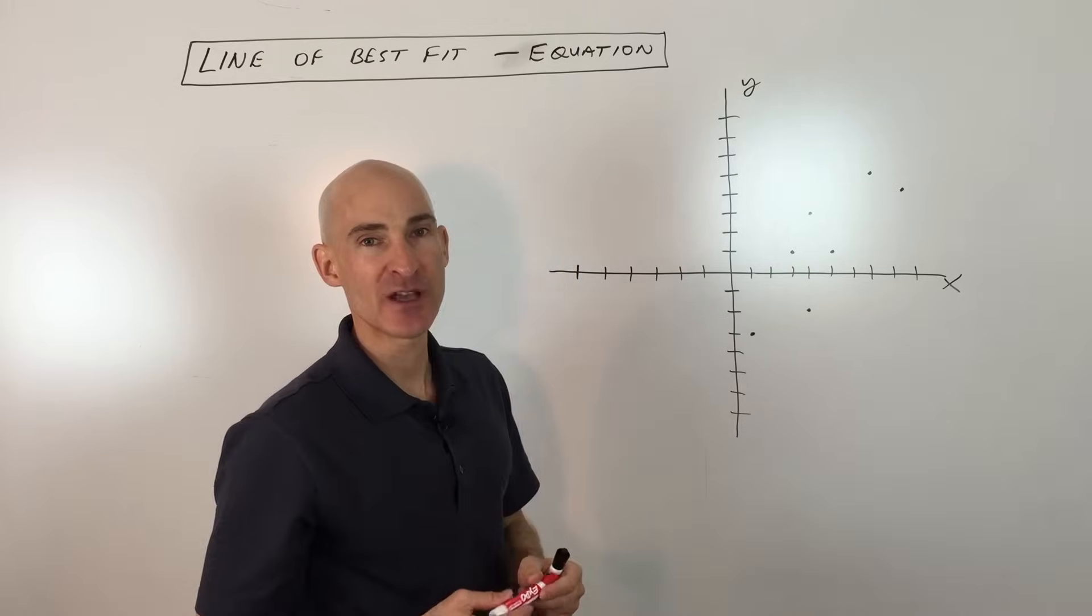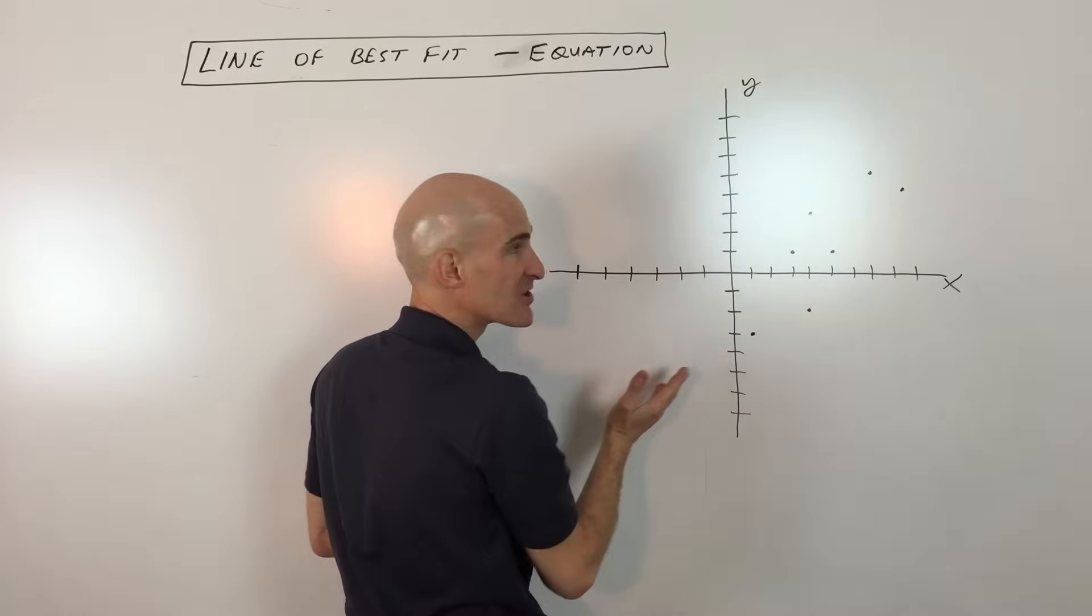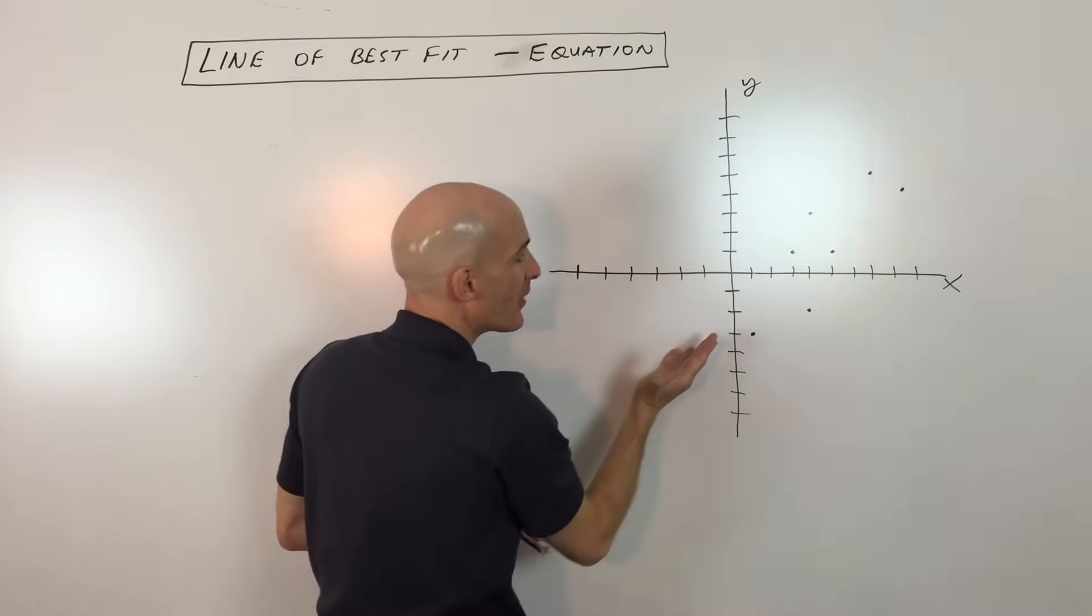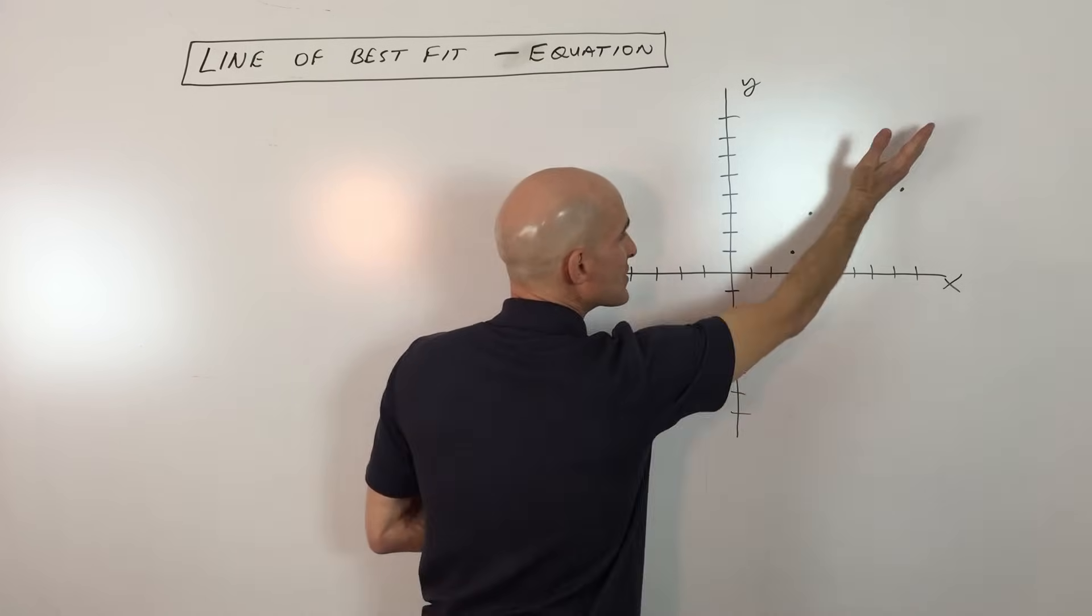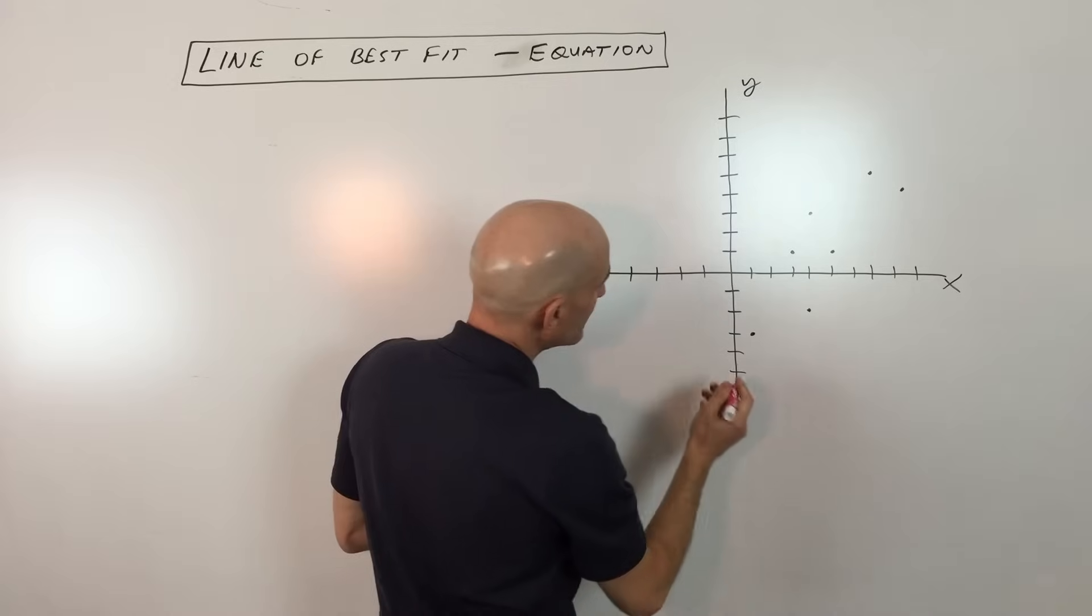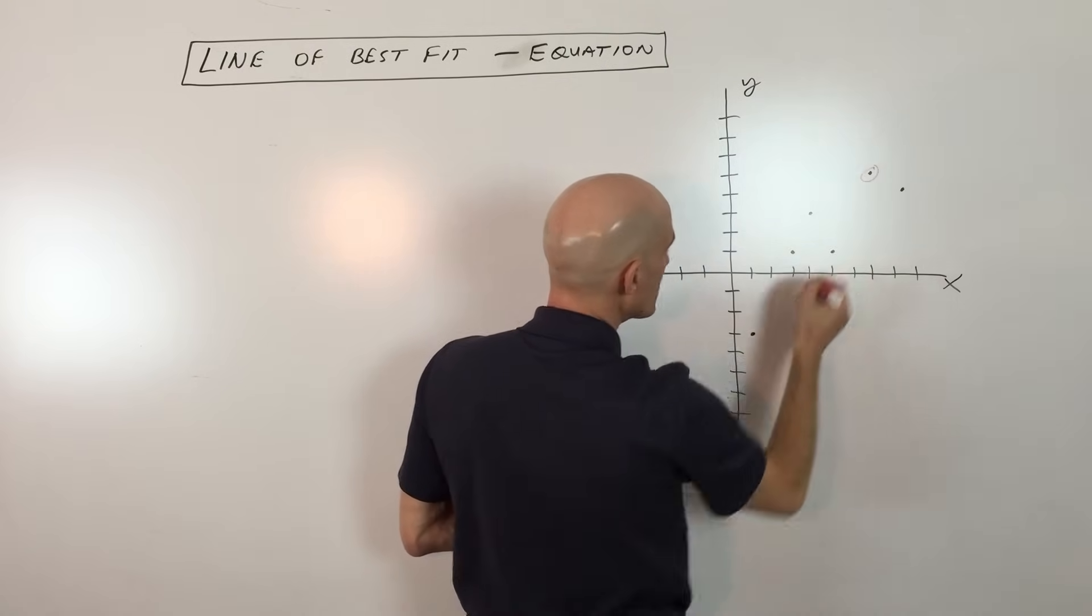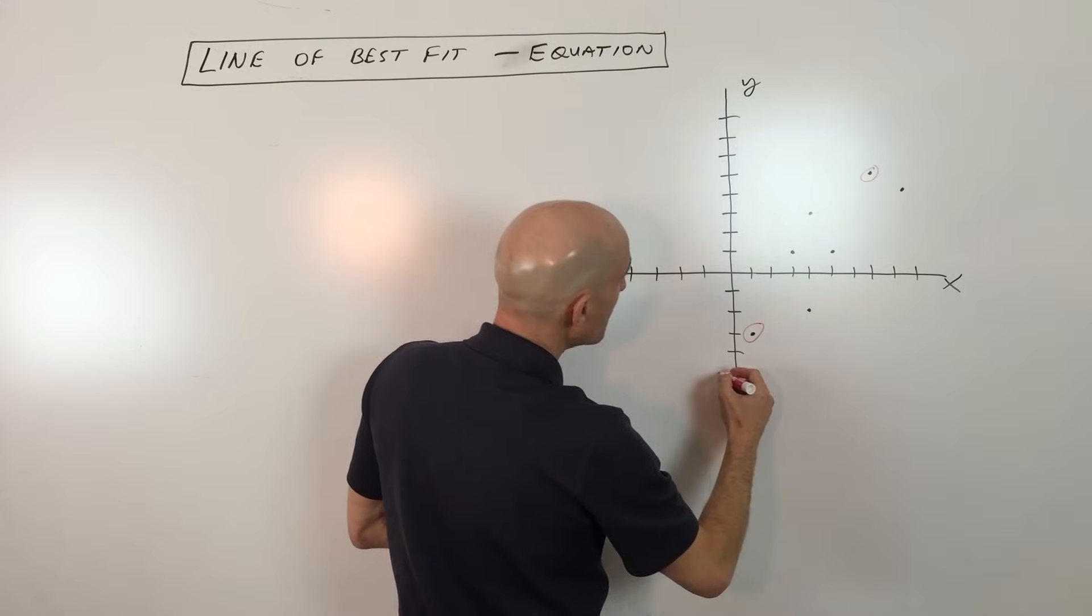So what you would do is you would get a ruler, okay or a yardstick in this case for this large board, but you would try to draw that line in such a way that it comes as close to those points as possible. Now I'm just going to eye it and one thing I'm going to notice is that it looks like it's going to go through these two points right here.